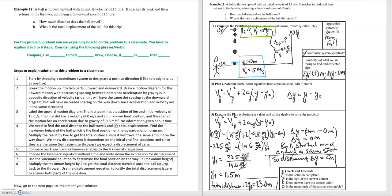In this video we'll be going over example 12. A ball is thrown upward with an initial velocity of 15 meters per second. It reaches its peak and then returns to the thrower achieving a downward speed of 15 meters per second. We're asked to find how much distance the ball travels, and then the second is the total displacement of the ball for this trip.